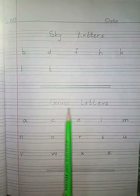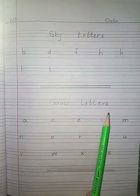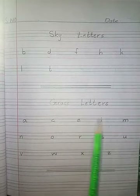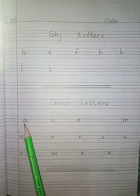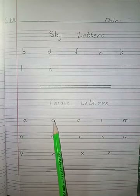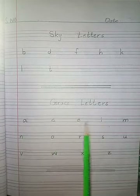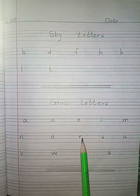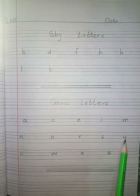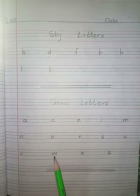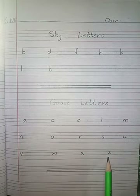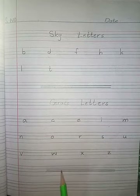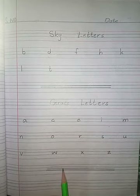Now write grass letters on the same page. Grass letters are the letters which we write in the middle lines — for example: a, c, e, i, m, n, o, r, s, u, v, w, x, and z. After writing grass letters, draw a finishing line.